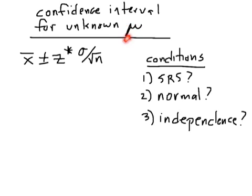This is a confidence interval for some unknown μ if you don't know the mean. This is a statistic, plus or minus. This whole thing is the margin of error. You'll recognize this part as the standard deviation of x̄, or the standard deviation of the sampling distribution.